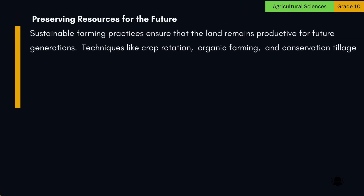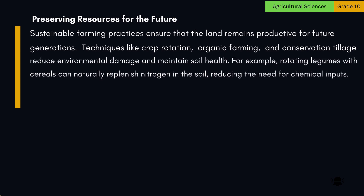Preserving resources for the future: Sustainable farming practices ensure that the land remains productive for future generations. Techniques like crop rotation, organic farming, and conservation tillage reduce environmental damage and maintain soil health. For example, rotating legumes with cereals can naturally replenish nitrogen in the soil, reducing the need for chemical inputs.